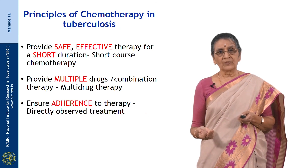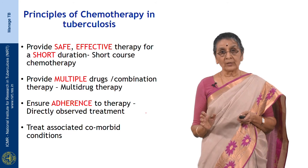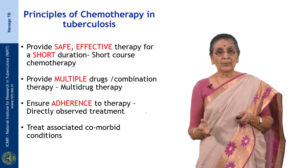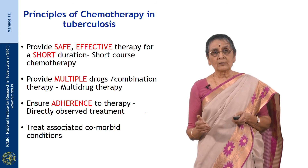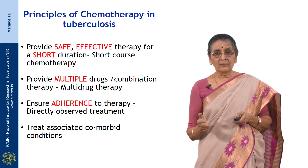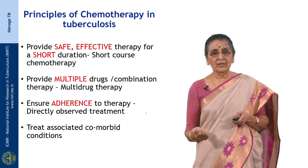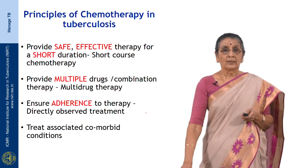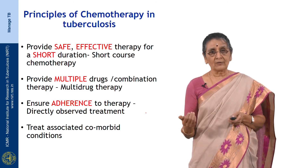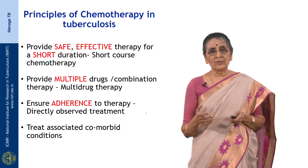Let us go into the principles of chemotherapy in tuberculosis. The first principle is safety and efficacy — any drug or regimen prescribed should be safe and effective. Prior to starting treatment, check liver and renal function to ensure proper functioning. The drugs used are rifampicin, INH, ethambutol, and pyrazinamide as short course chemotherapy. Another key principle is to use multiple drugs in combination — never give a single drug, as monotherapy always leads to failure and resistance.